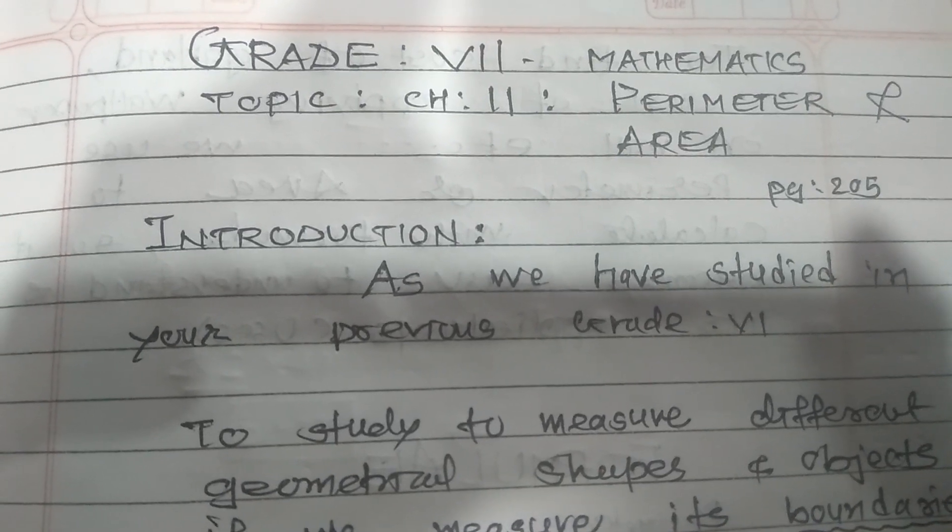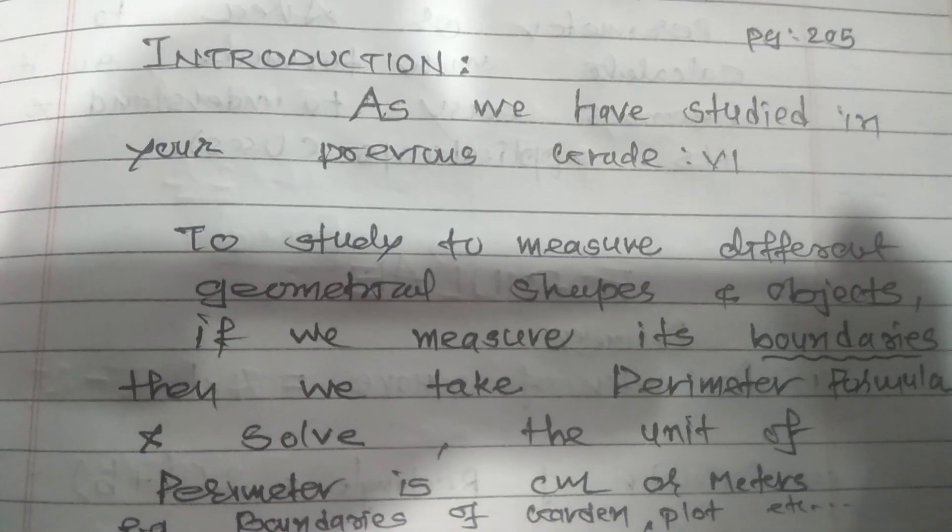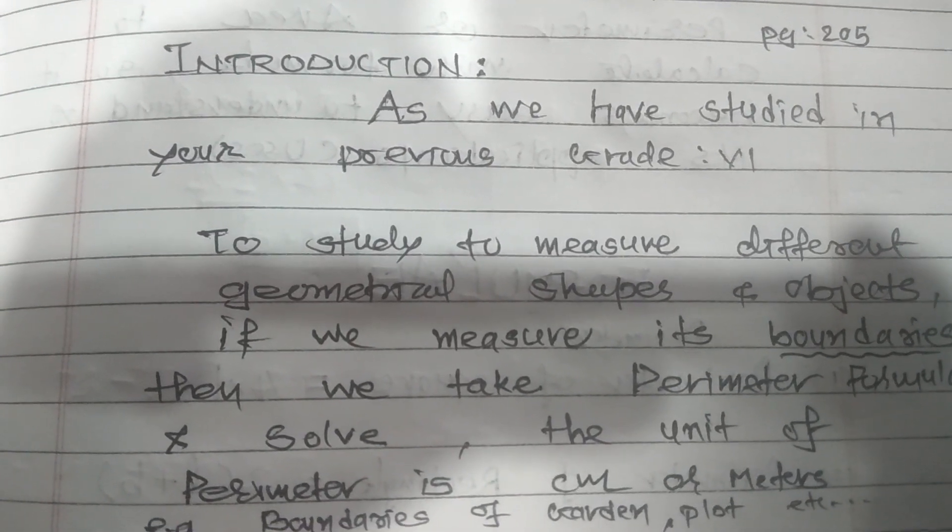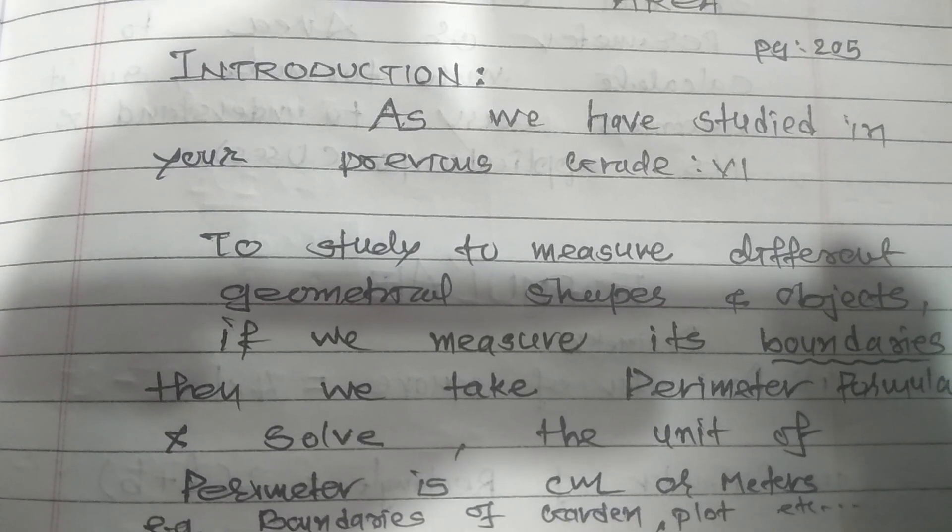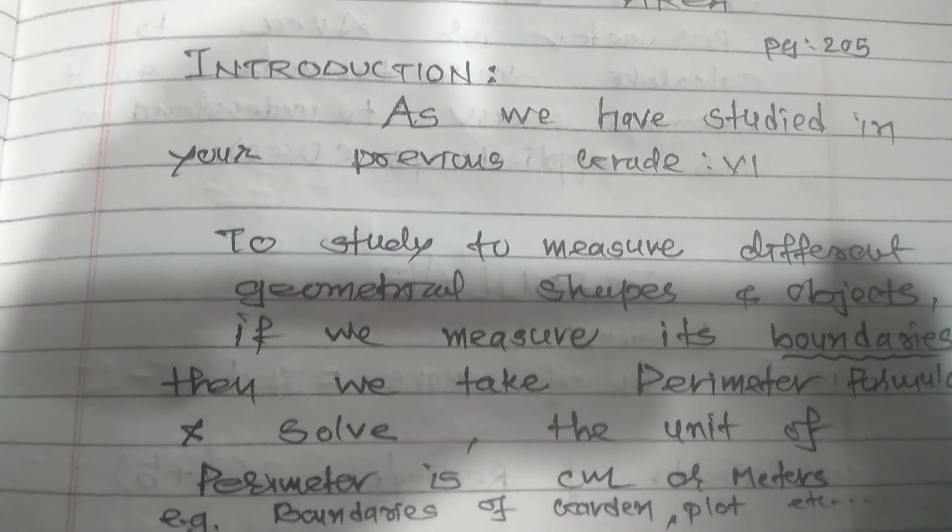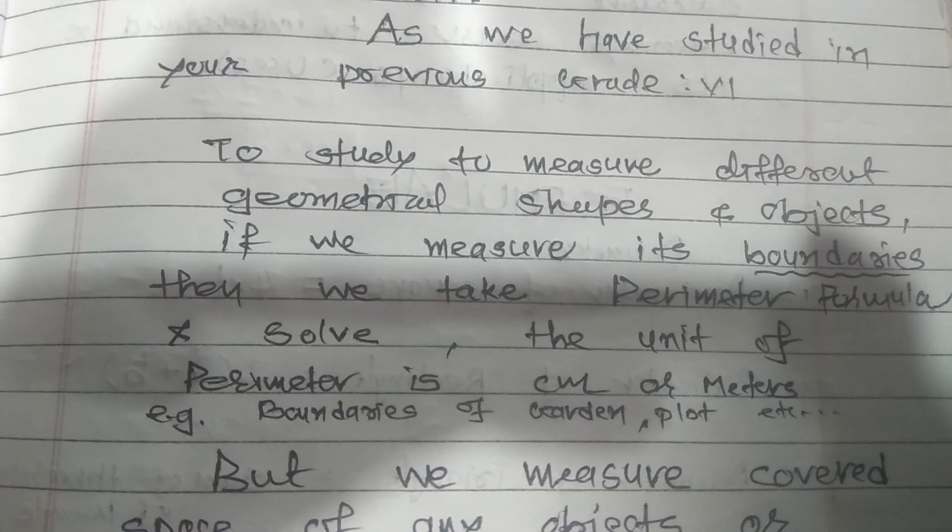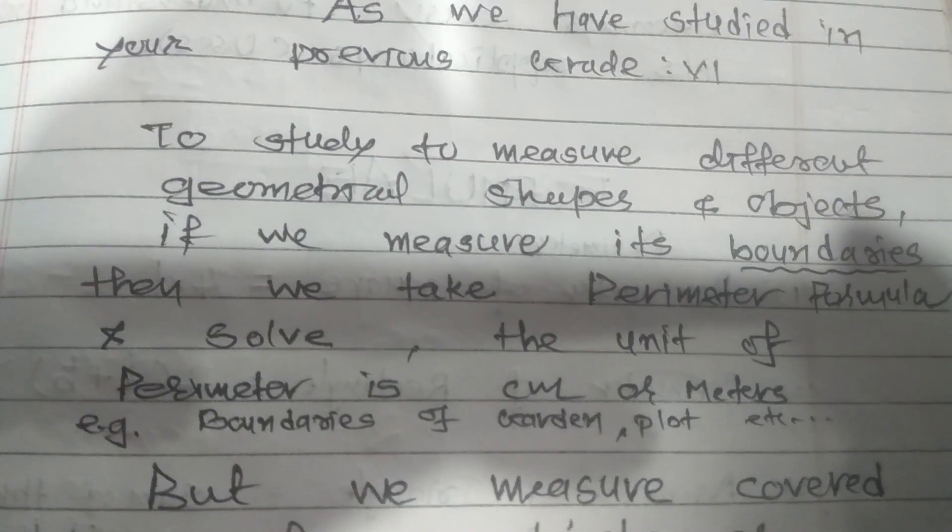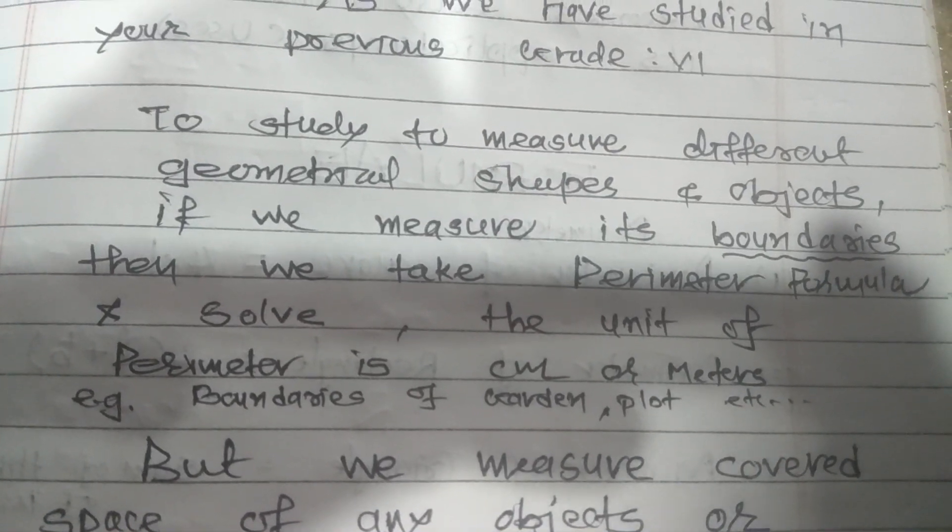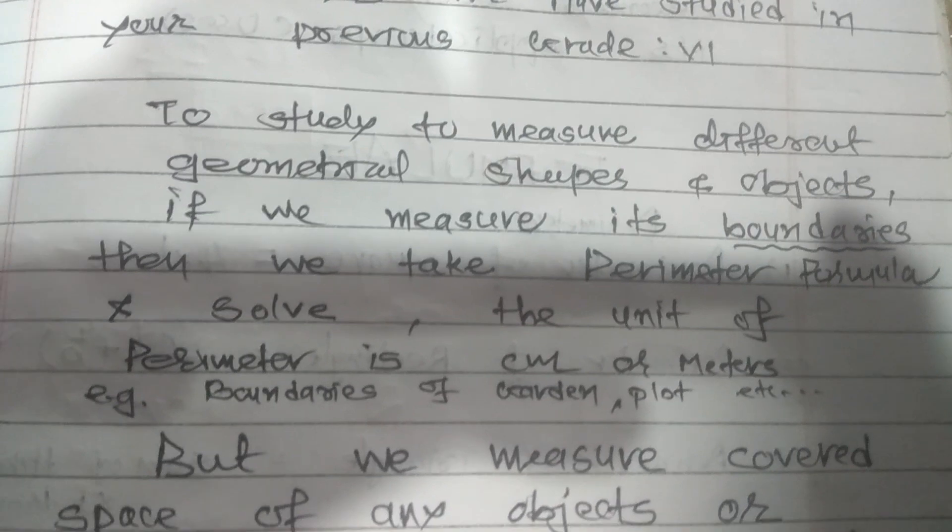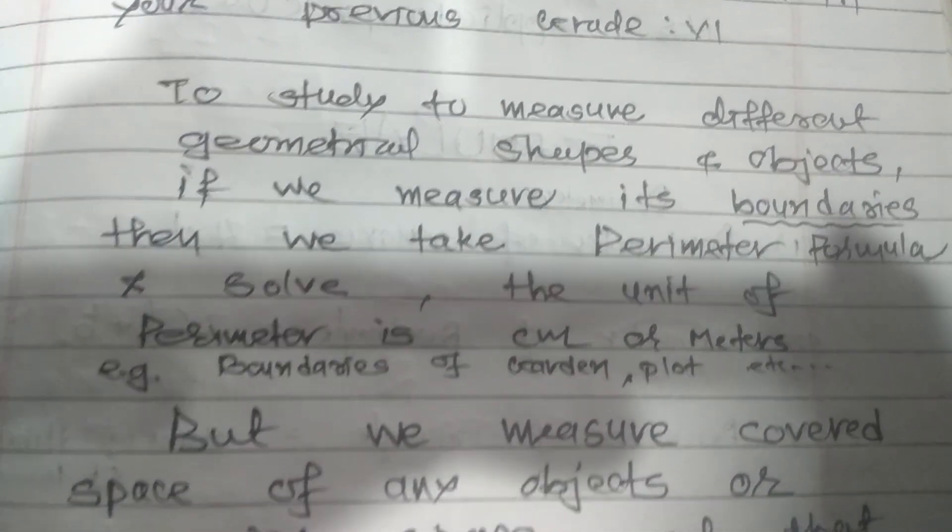So students, first of all, open page number 205 where we can start with the introduction. As you have studied in your previous grade 6, to study the different geometrical shapes and objects, if we measure its boundary then we take the perimeter formula and solve. You all have studied this in your 6th standard, so please remember that.